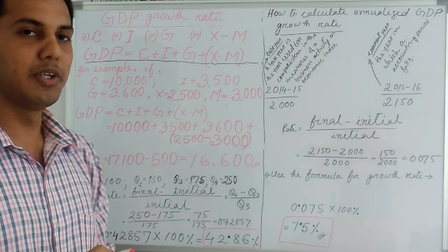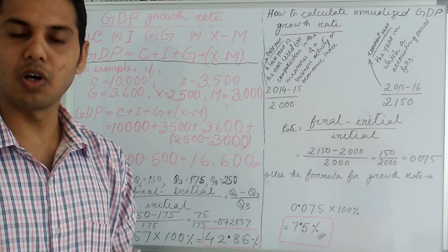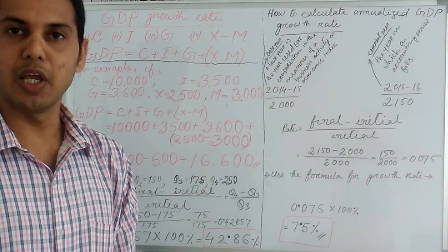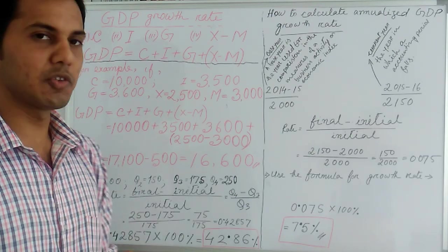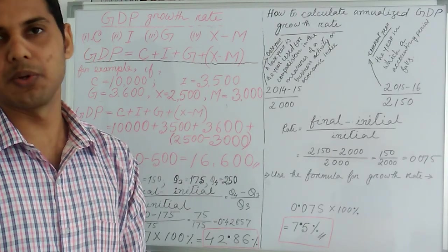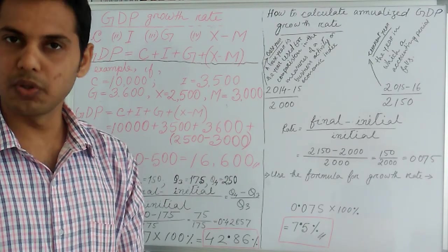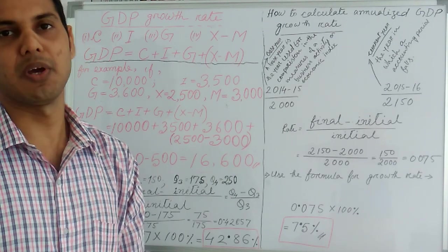Number two, I, denotes business investment, including construction and inventory levels. Z denotes government spending. Its largest categories are Social Security benefits, Medicare benefits, and defense spending.